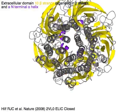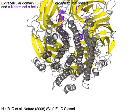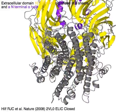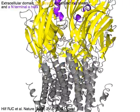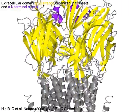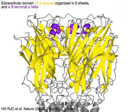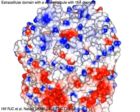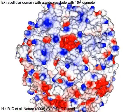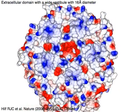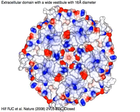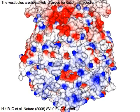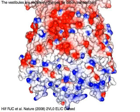Extracellular domain: 10 beta strands organized in two sheets in yellow, and an N-terminal alpha helix in purple. The extracellular domain has a wide vestibule with 16 angstroms diameter. The vestibules are negatively charged for cation transduction.